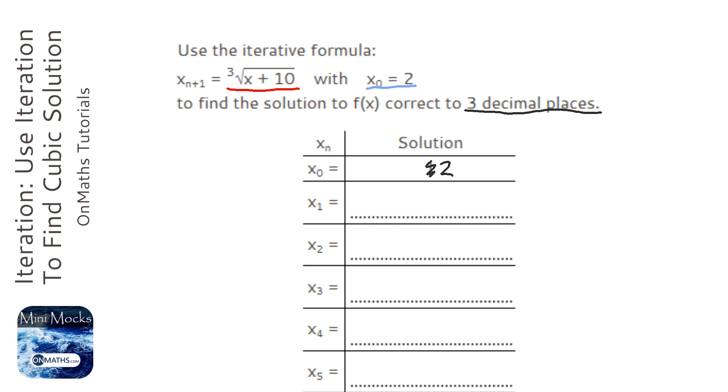when it asks you to round to, say, 3 decimal places, which it is in this question, then it's very simple to do, because it's getting closer and closer, it will get there quite quickly.